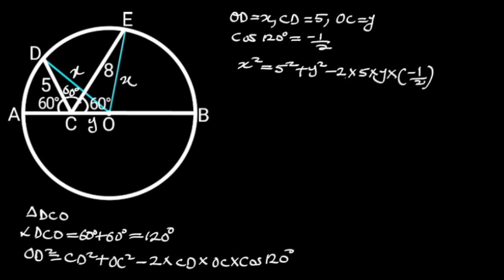Simplifying these will give us X squared is equal to 25 plus Y squared plus 5Y. Let's call this equation 1.